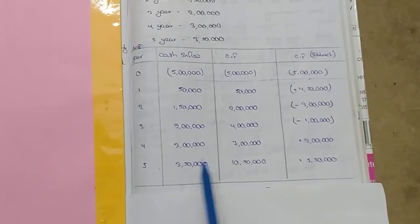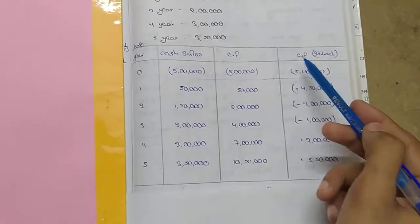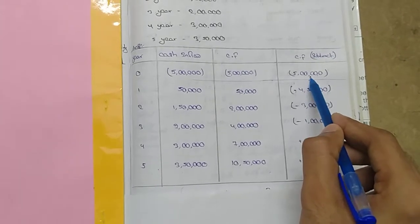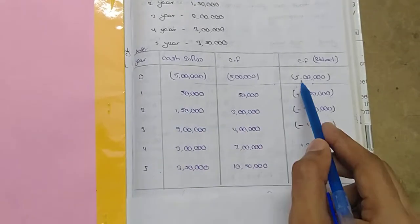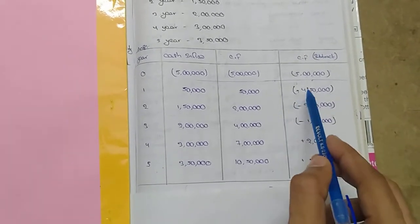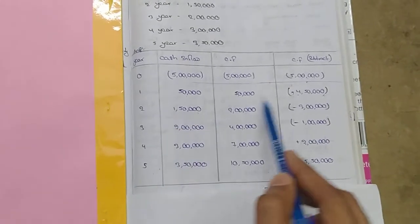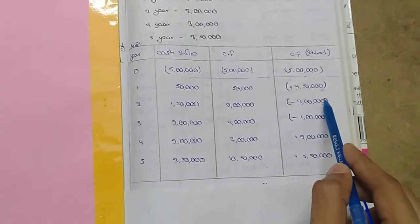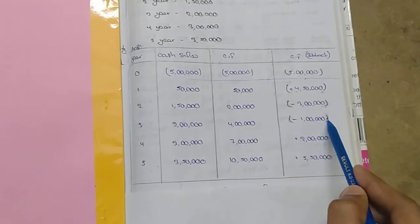Now we compute the balance by subtracting cumulative CF from the initial investment of five lakhs. Five lakhs minus fifty thousand equals minus four lakhs fifty thousand — this is negative. Next: minus four lakhs fifty thousand plus one lakh fifty thousand gives minus three lakhs — still negative. Next: minus three lakhs plus two lakhs gives minus one lakh — still negative.